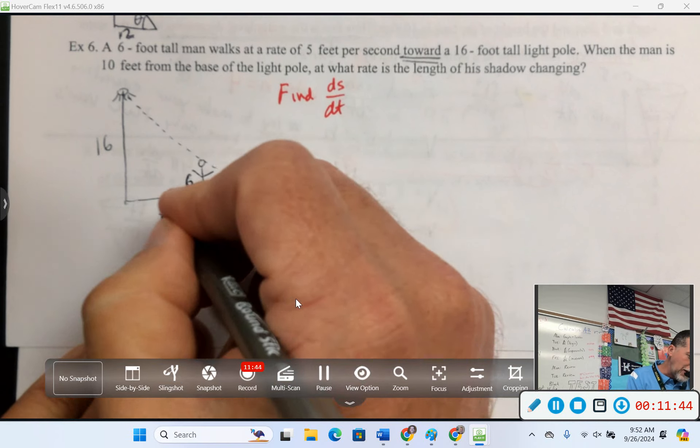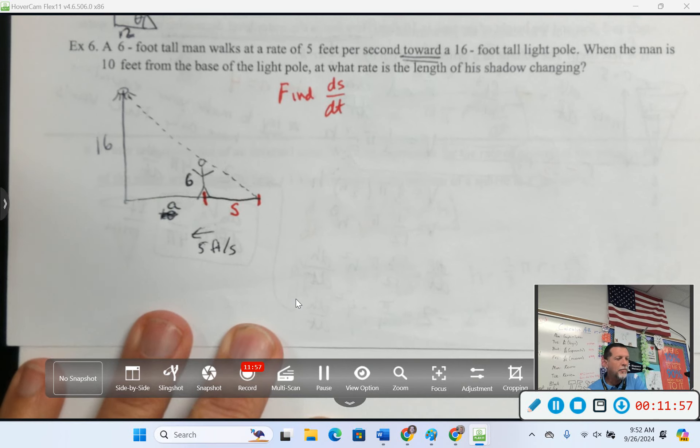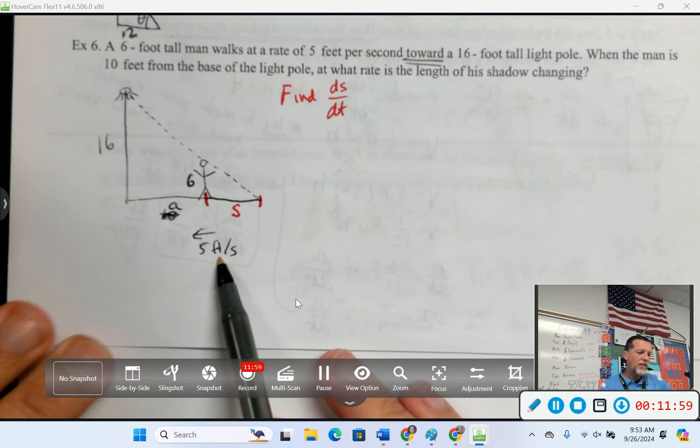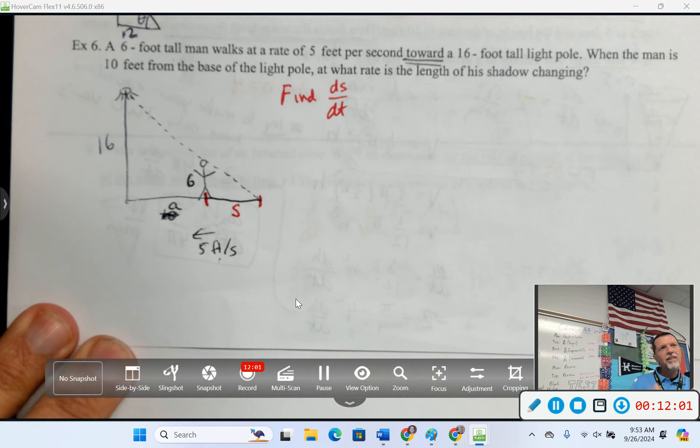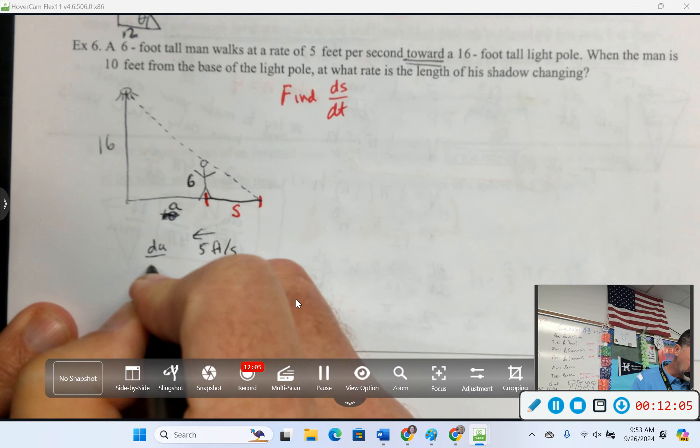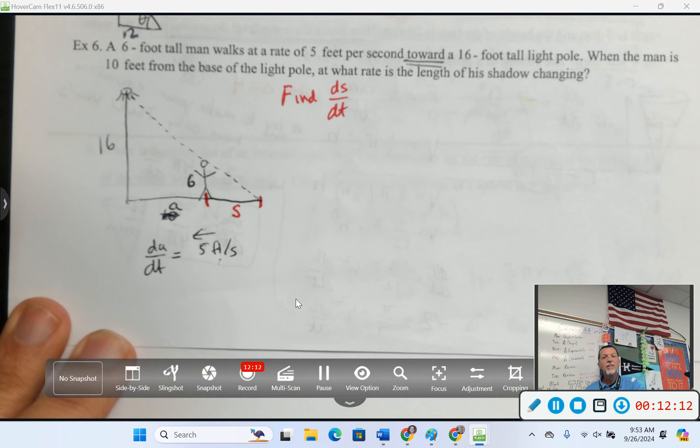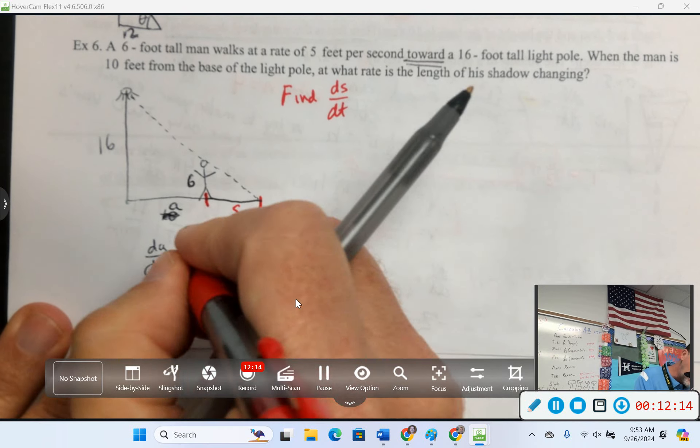This might be an A² + B² = C², I don't think it's that, though. I think there's like some ratio thing going on here. So, now that I've labeled that A, what is this 5 feet per second? dA/dt. And is it positive or negative? What's A doing? Is A getting bigger or smaller? Smaller. So that means dA/dt is negative.